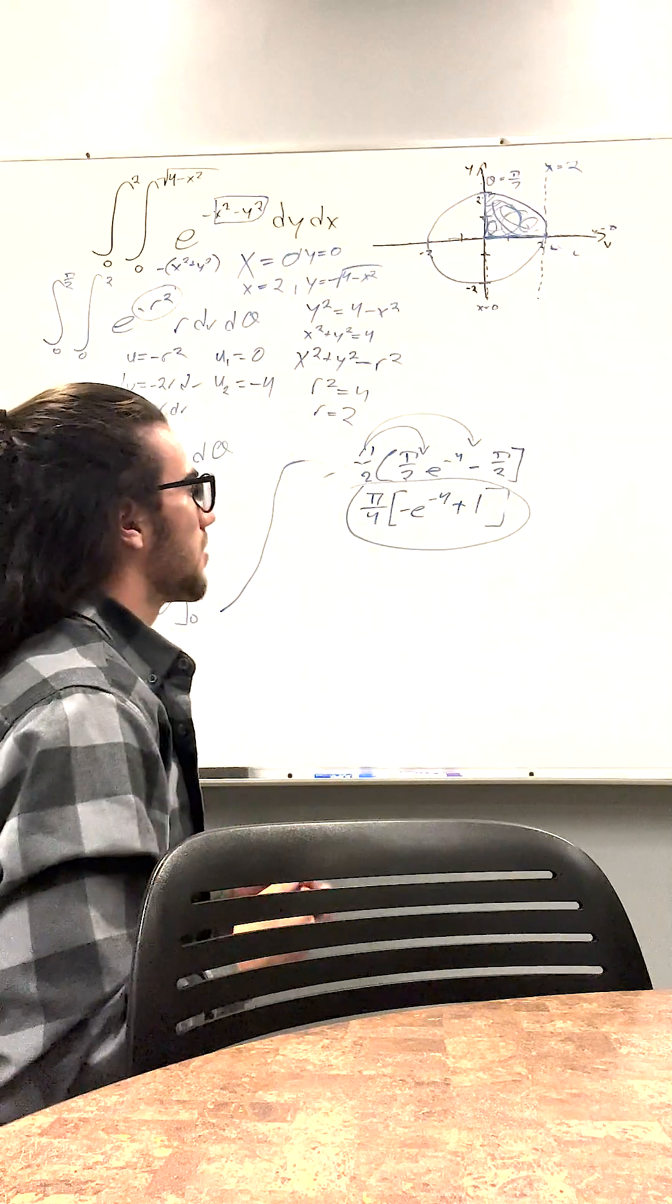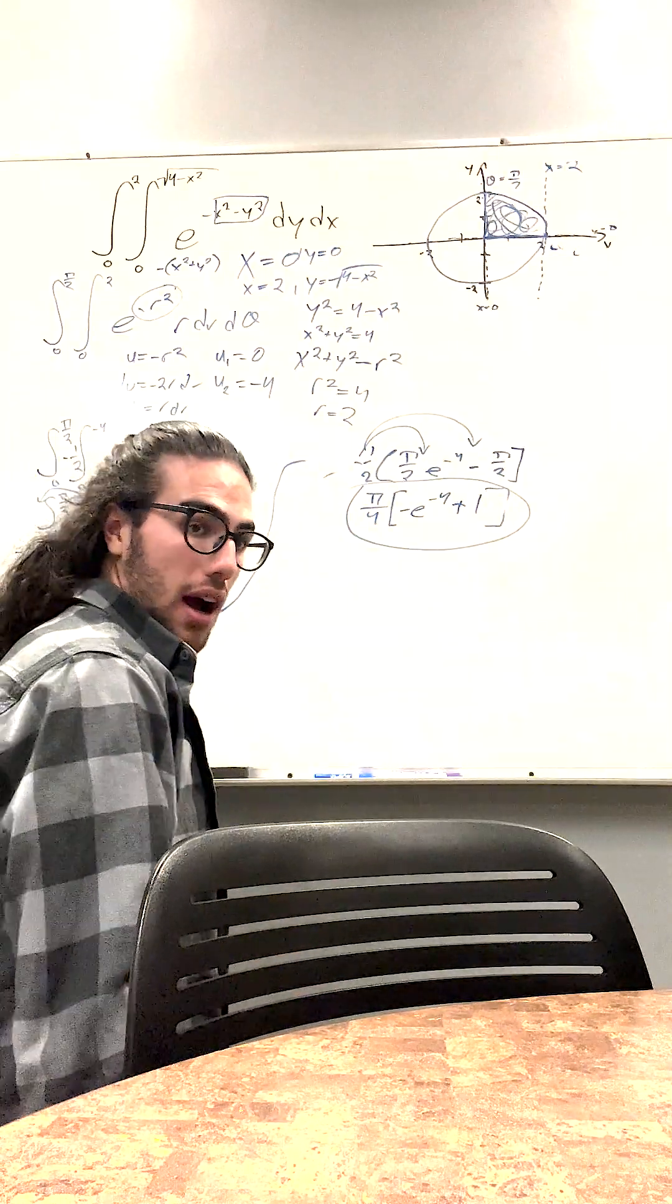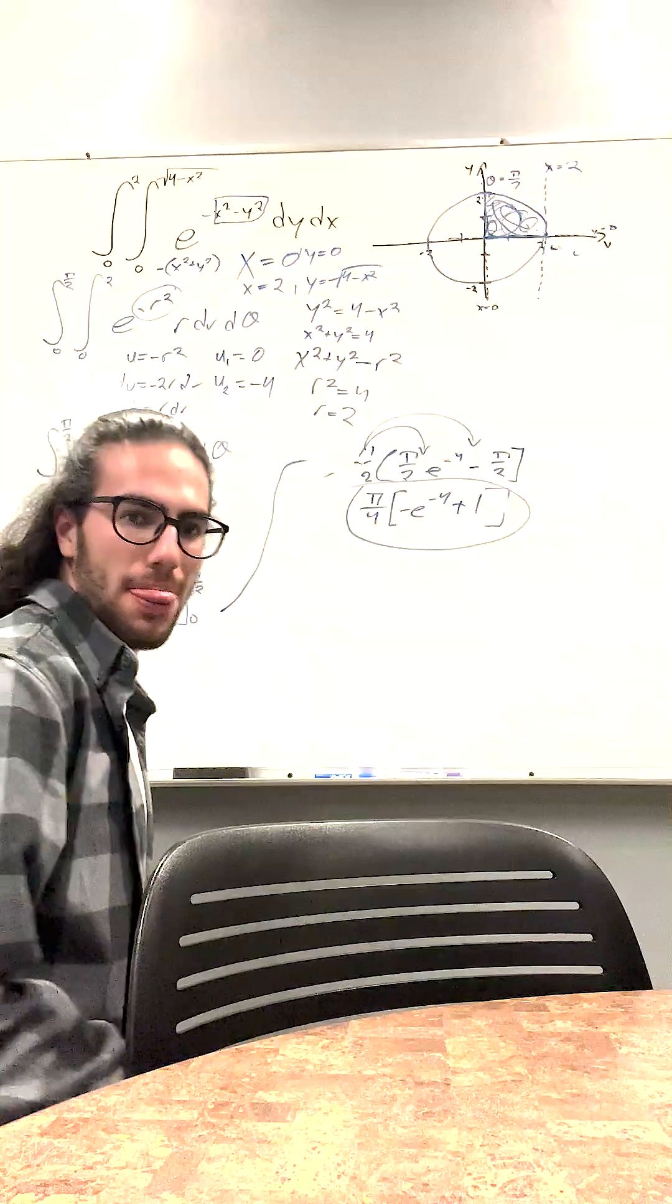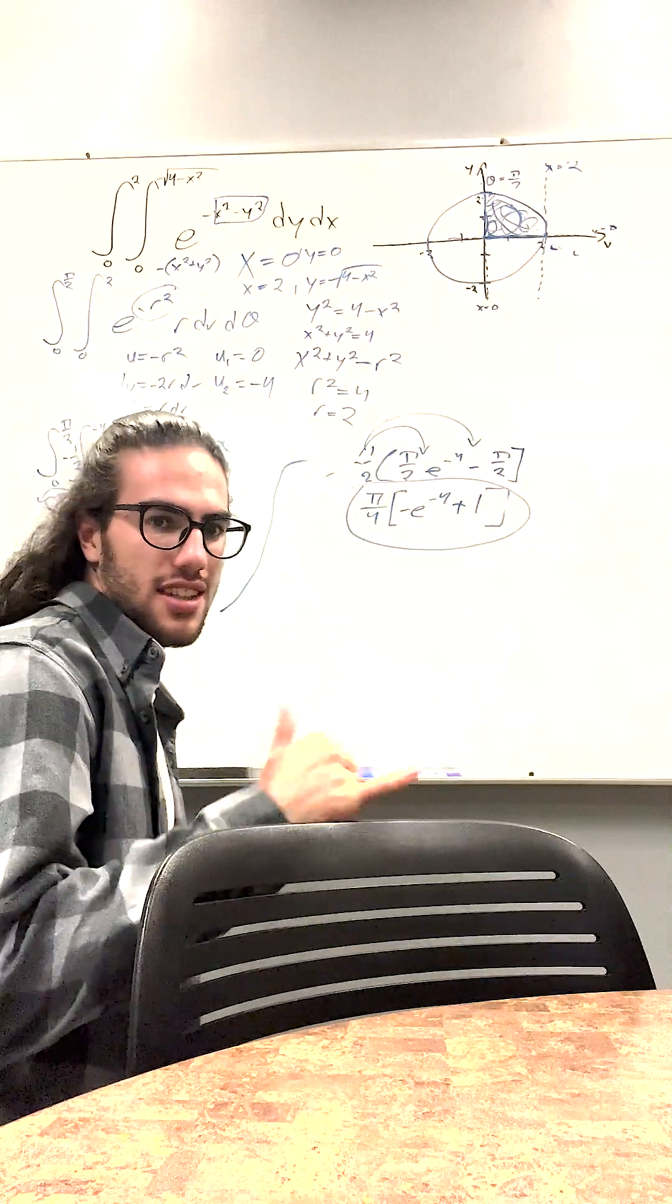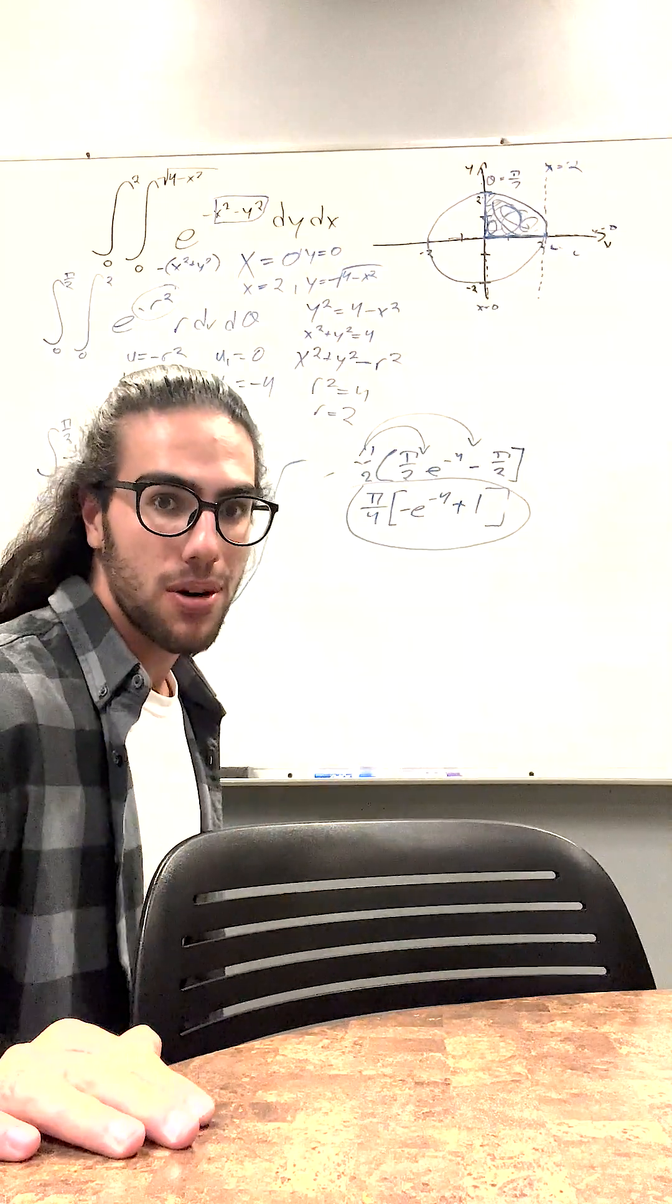Pi over 4 times 1 minus e to the negative 4. Crazy. Good calculus guys. Good luck on your homework and stuff.